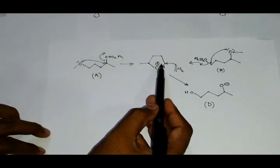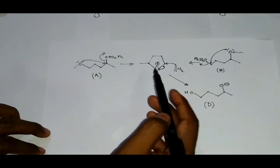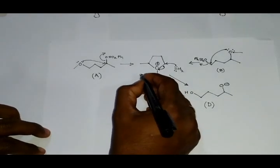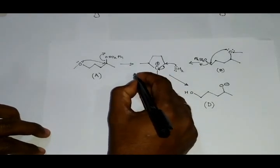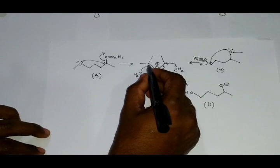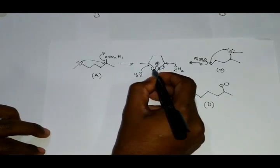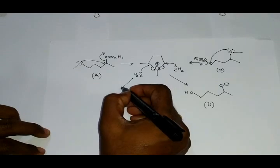Because of this reaction we get product D from this intermediate. If the water molecule, the lone pair of electrons, attacks on this bond, this bond will come onto the oxygen, leading to the formation of a product.